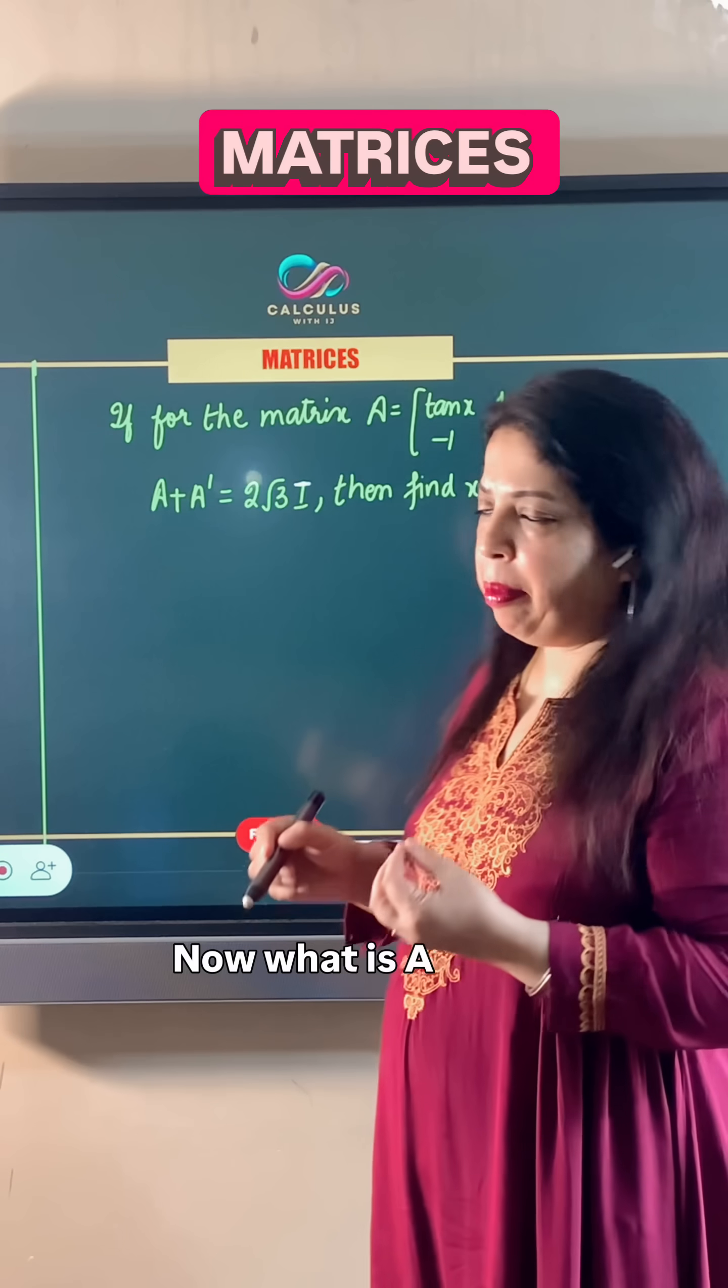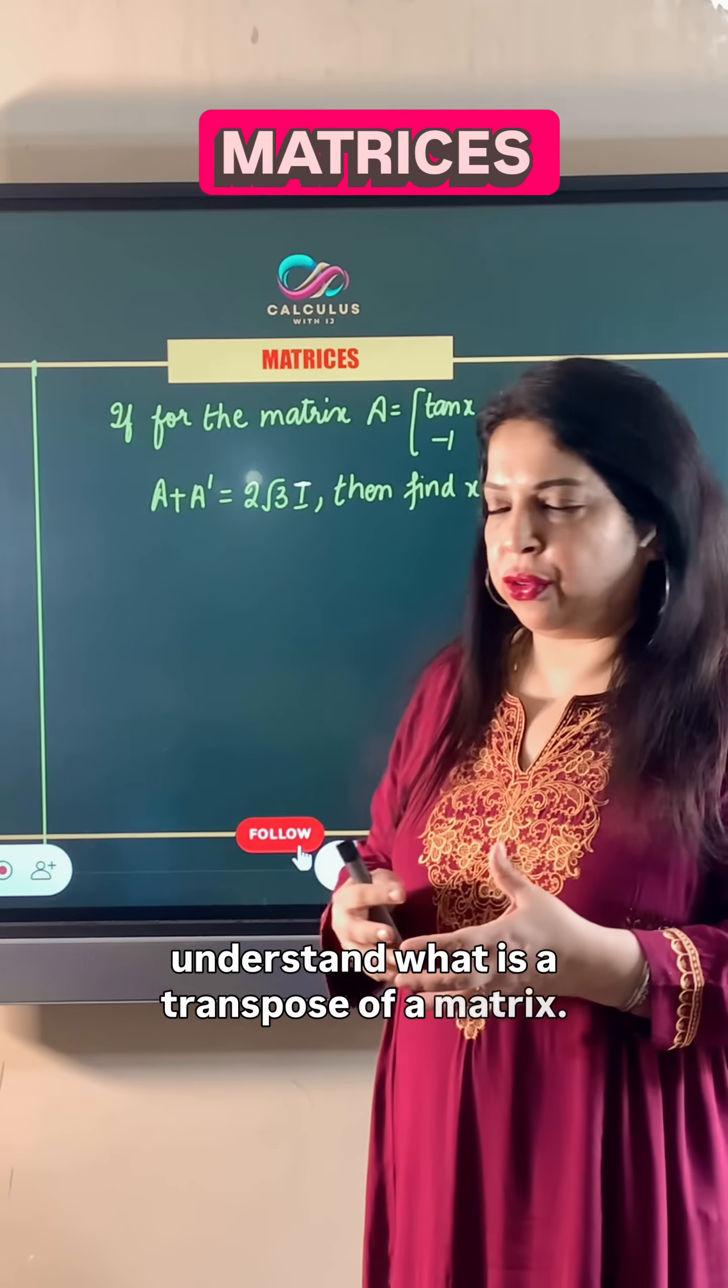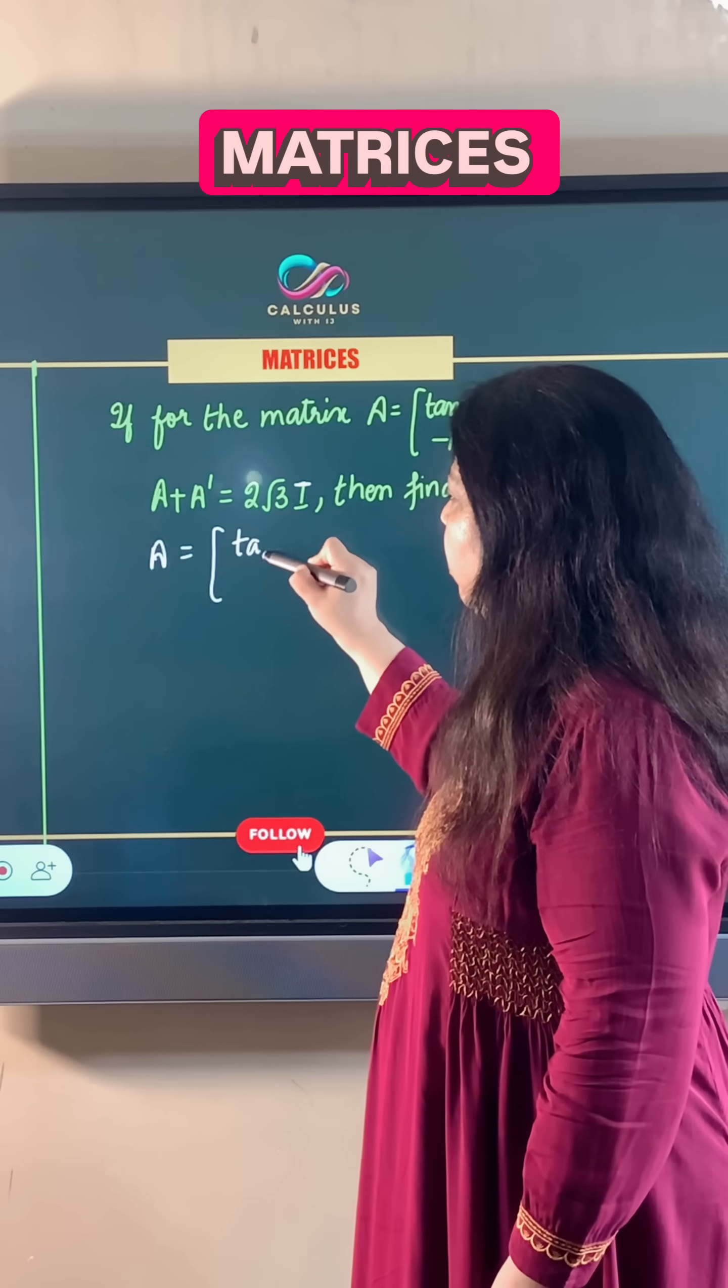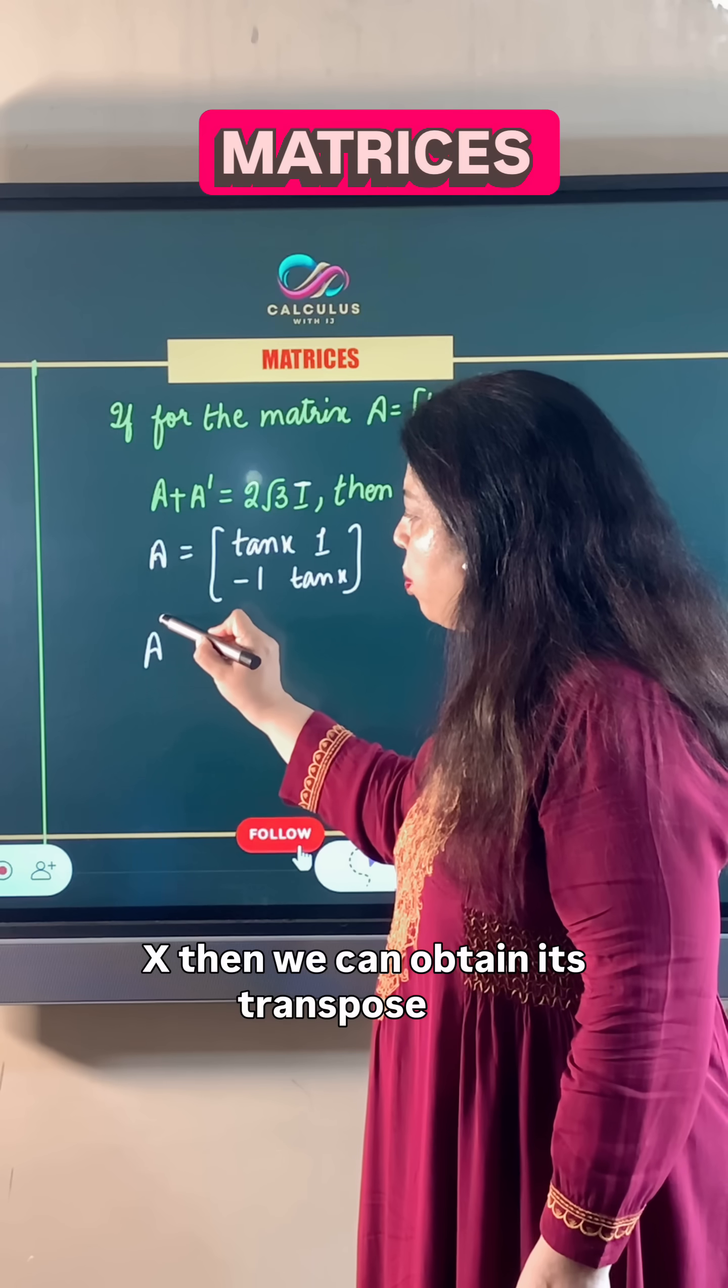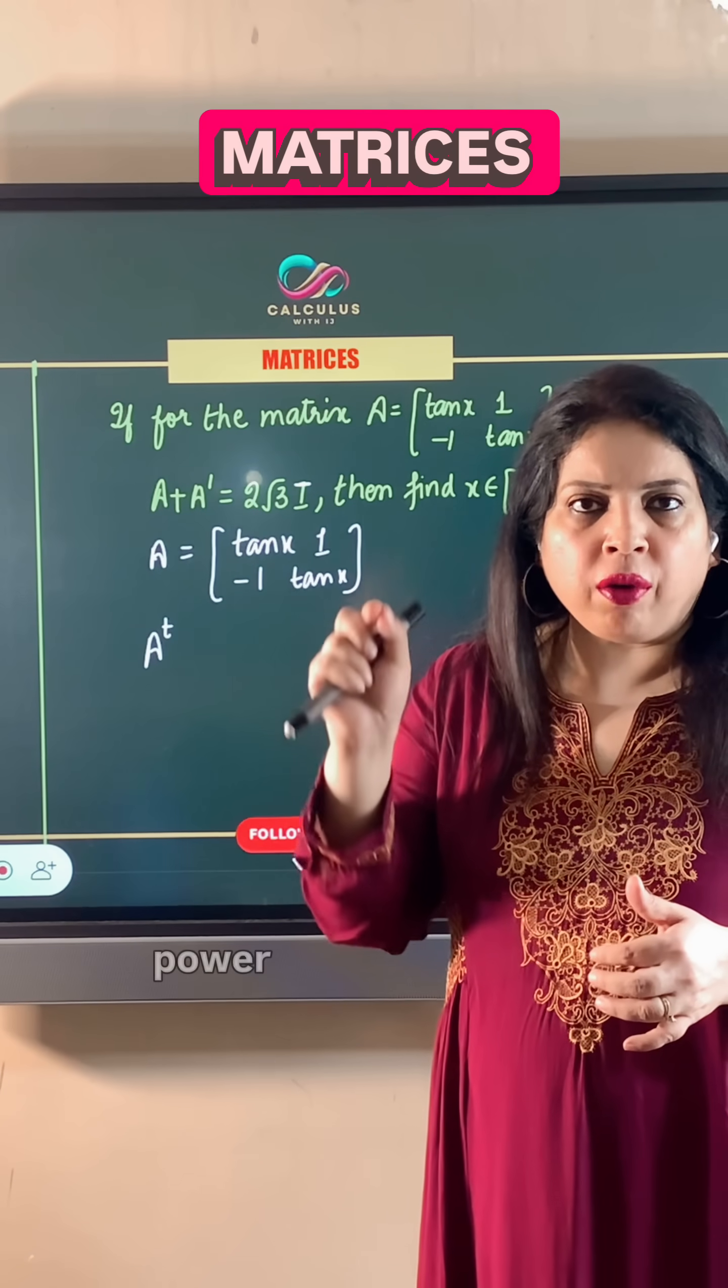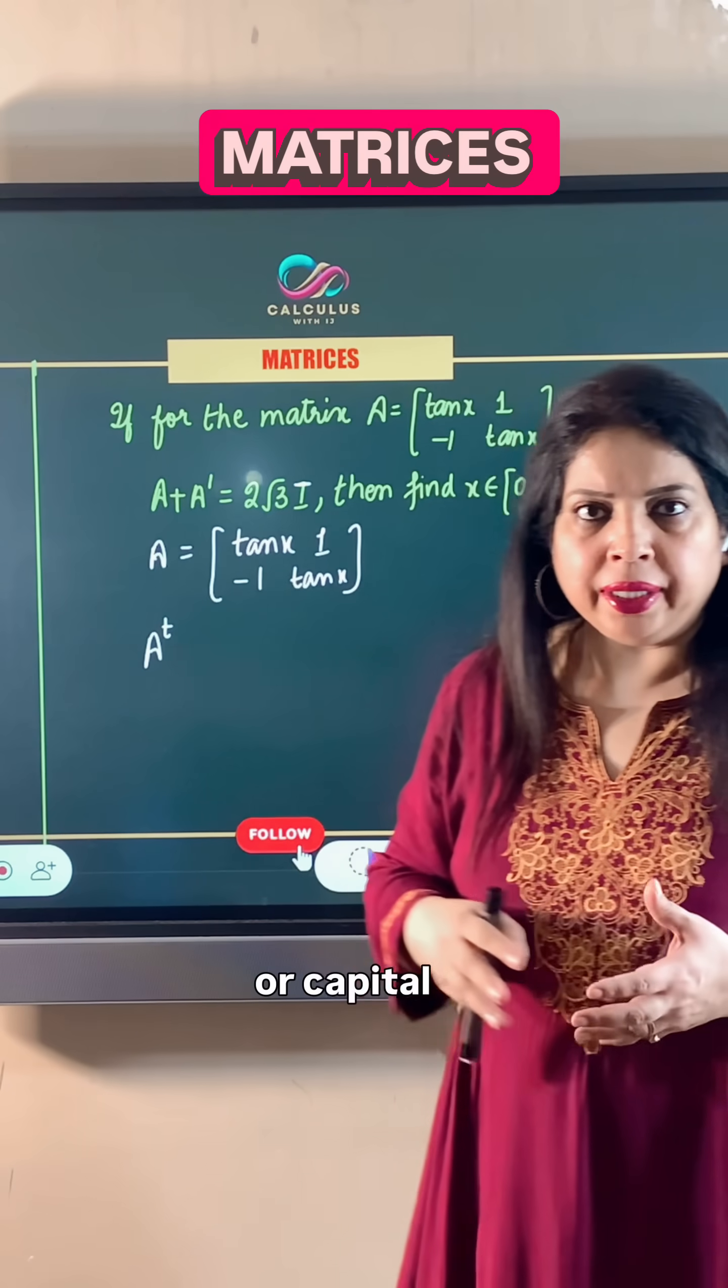Now what is A plus A transpose? Let's understand what is the transpose of a matrix. If a matrix A is tan x, 1, minus 1, tan x, then we can obtain its transpose. Transpose is also written as A with the power small t in the exponent or capital T.